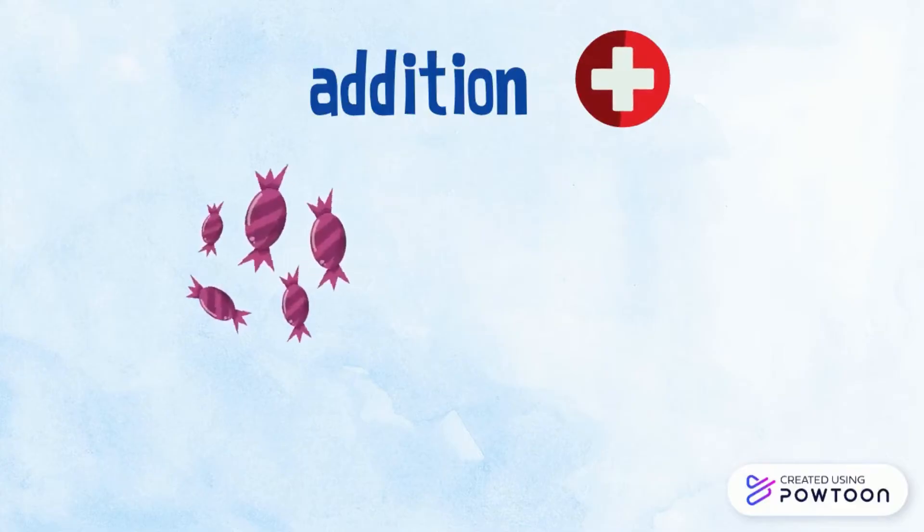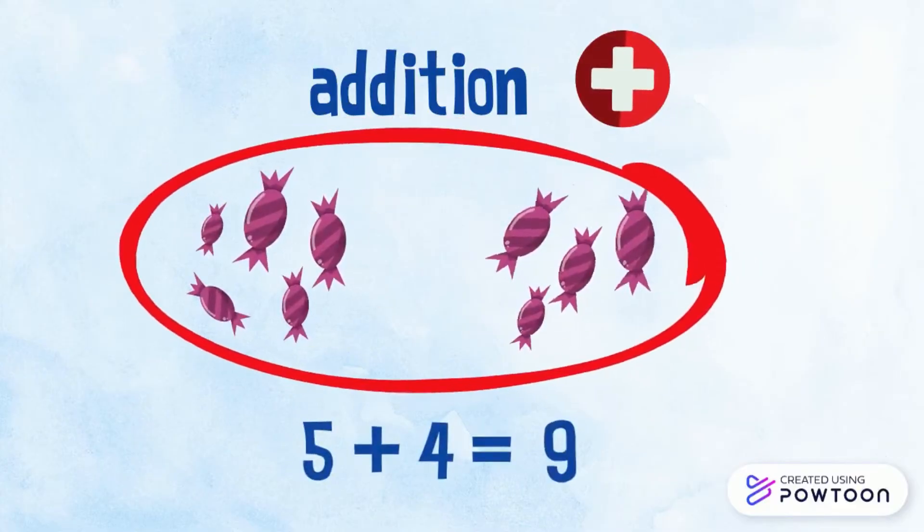If we have 5 candies and we add 4, so we write 5 plus 4, and the total number is 9.